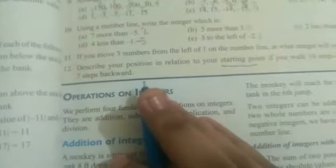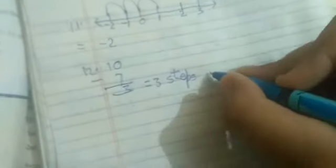So we calculate: 10 steps forward minus 7 steps backward. The answer will be 3 steps forward from the starting point, and that is our answer.